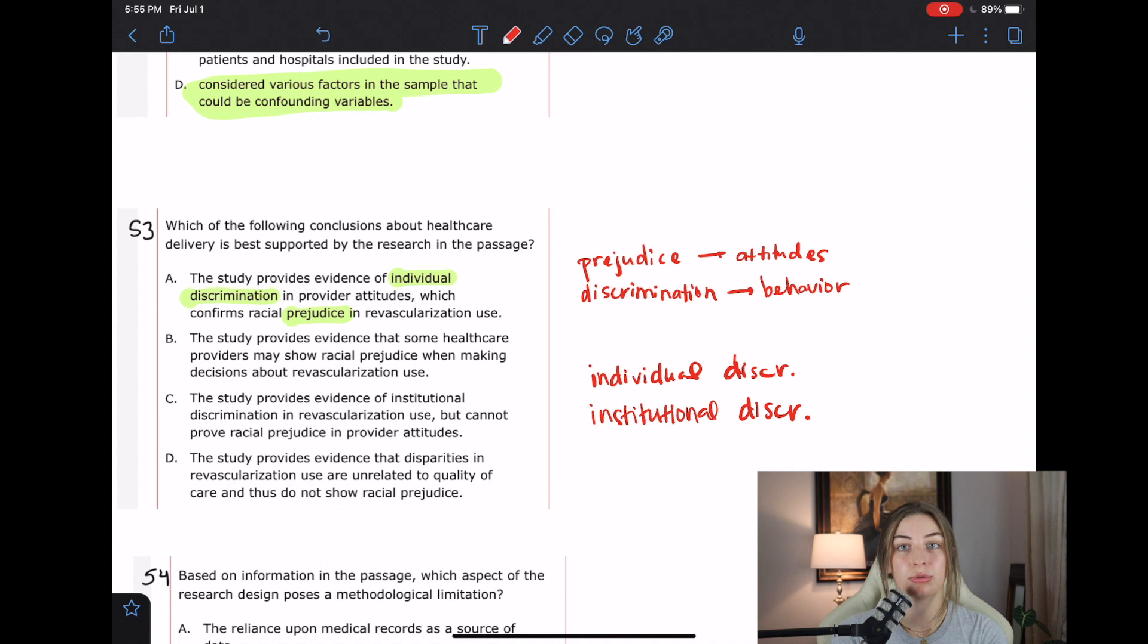Individual is obviously going to be just one person, an individual, and then institutional is going to be like a hospital system or the government or some business. And remember, since these are both discrimination, they are both going to have to exude behavioral differences based on what part of a group you are in, whether that be race or gender or sexual orientation or whatever. So enough chatter, is A correct? I don't think so. Cause I don't think this was individual discrimination. I'm not going to mark it out. I'm going to see what the rest of the answer choices say.